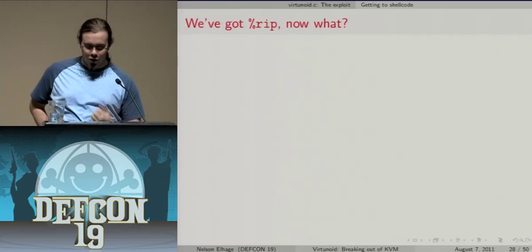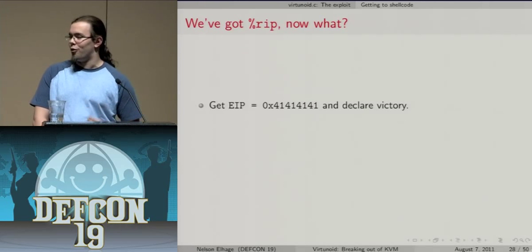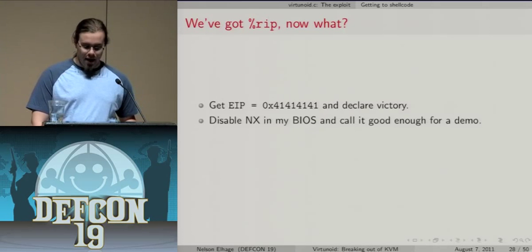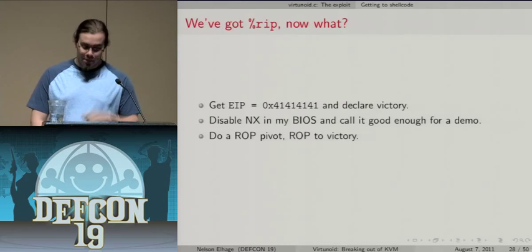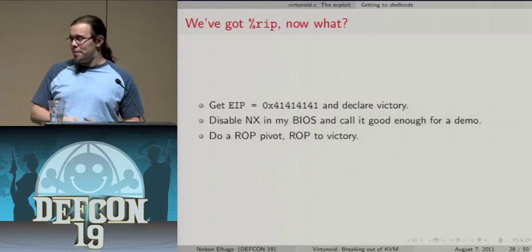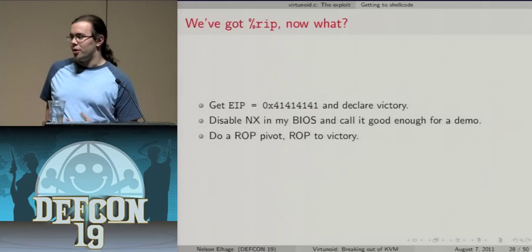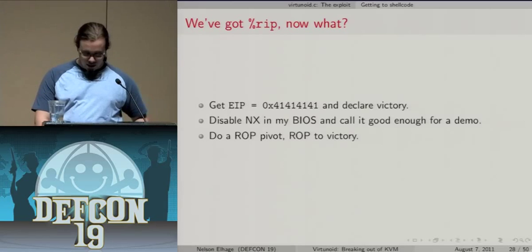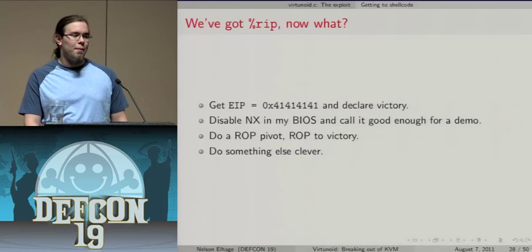We have RIP control, but we still need to handle non-executable pages. Options include using return-oriented programming to chain QEMU's own code to call mmap or mprotect and jump to shellcode. I chose a slightly different strategy using the timer chain mechanism. QEMU timers are stored in a sorted linked list via a next pointer. Since we control the entire fake timer, we control the next pointer. We can chain multiple timers together to execute multiple functions in sequence — a hybrid between return-to-libc and ROP, but dispatched through the timer mechanism.